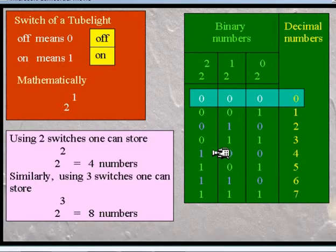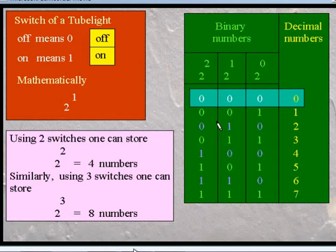All of you know about the decimal number system, but do you know that your computer follows the binary number system — the system with numbers 0 and 1? You can ask one interesting question: why does the computer follow the binary number system? The answer is very simple. Your computer is an electrical instrument.